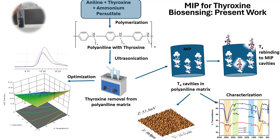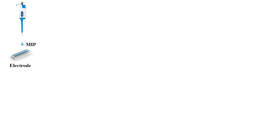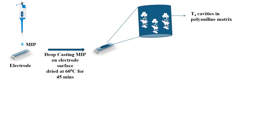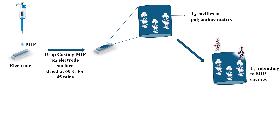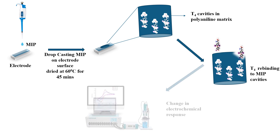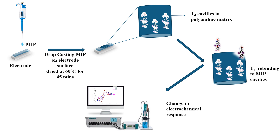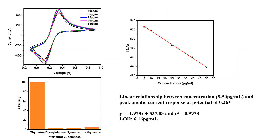After the cavities were generated, we did rebinding studies to see if the cavities are selective for the thyroxine molecule. We used thyroxine-imprinted polyaniline to check the electrochemical response. We coated this imprinted polymer on the electrode and, after adding thyroxine in different concentrations, we studied the electrochemical response and checked the change in peak anodic current with respect to the concentration of thyroxine.